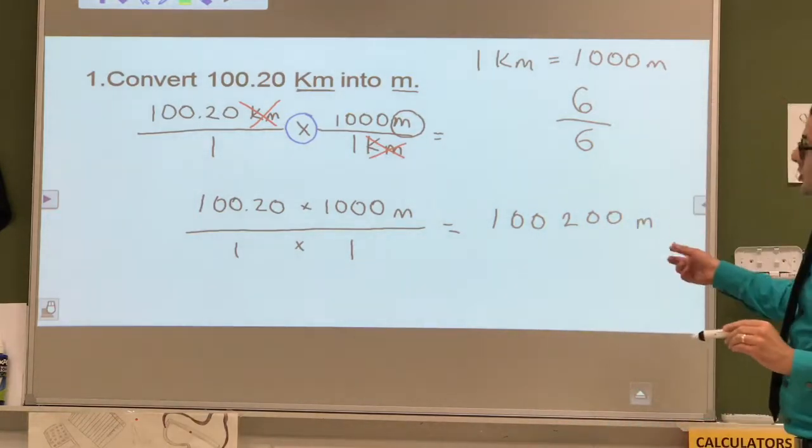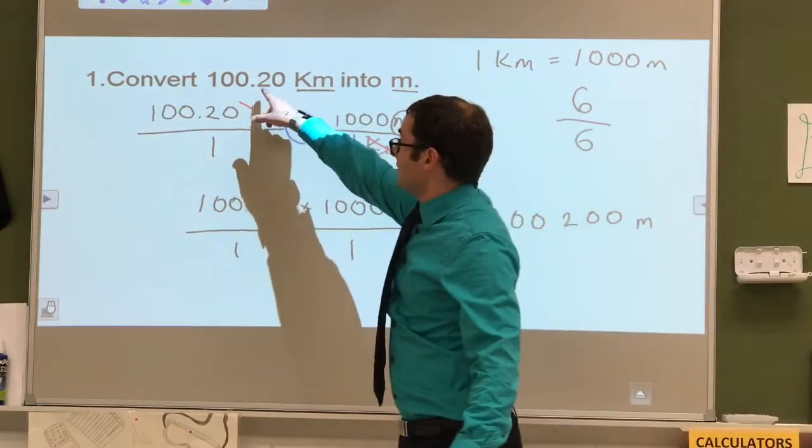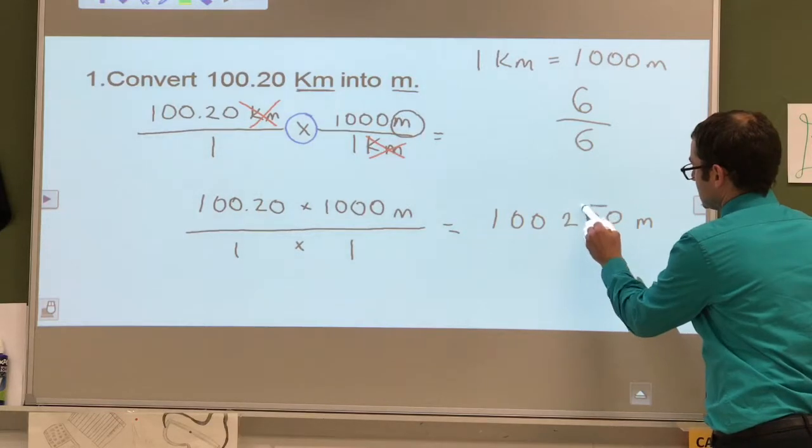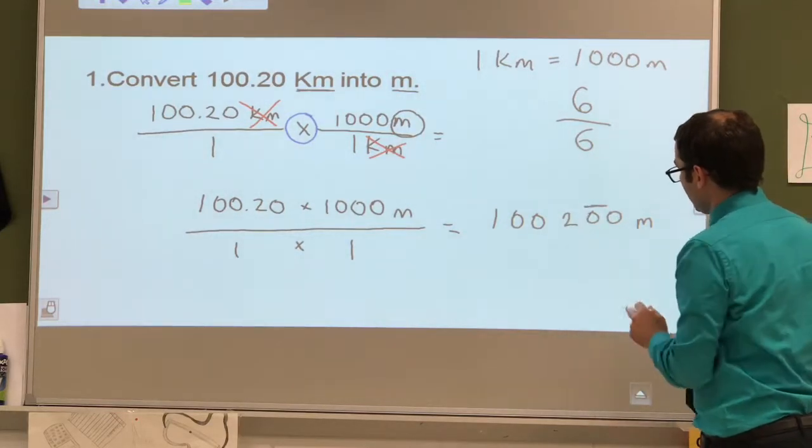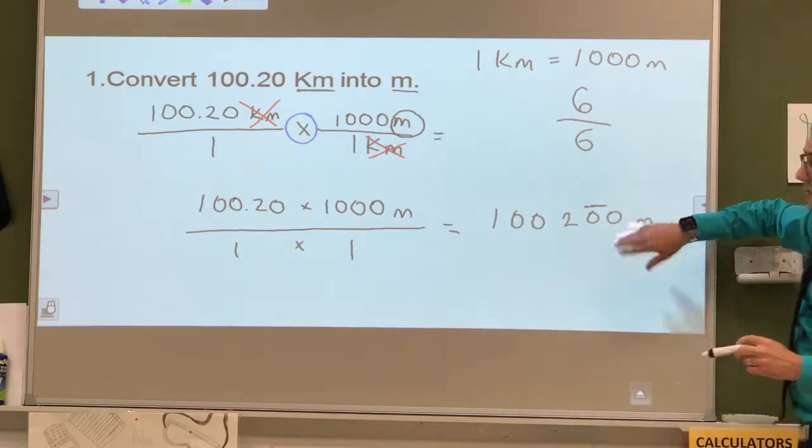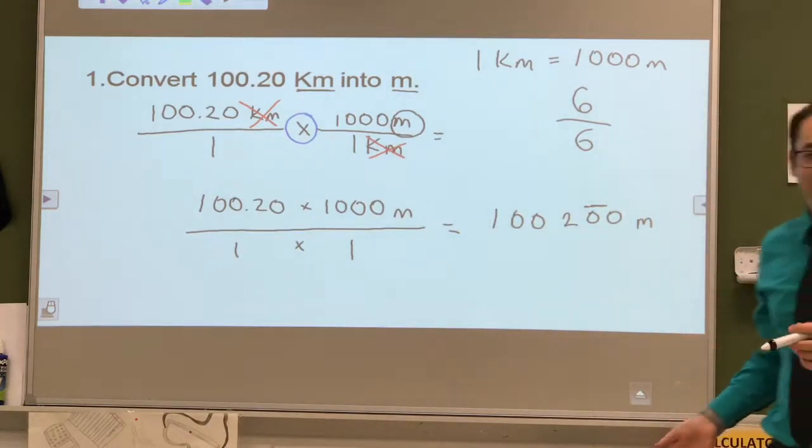And then you just check it out for sig figs. We have five sig figs here. So our answer has to have five sig figs. So that's when you use a little line on top of the zero there. And that'll count for this zero. And then this zero is not significant. And that's how you figure out the first problem.